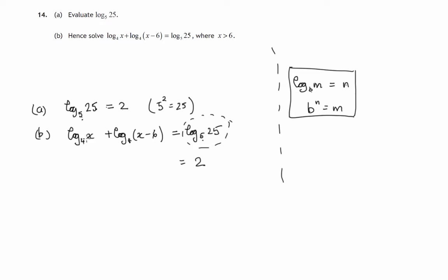Log to the base 4 of x plus log to the base 4 of x minus 6. If you add two logs, multiply the two numbers. It's one of the laws of logs. We've got the log of m plus the log of n, then you'll have log of m times n. That's assuming that the base is the same, which is the case here.